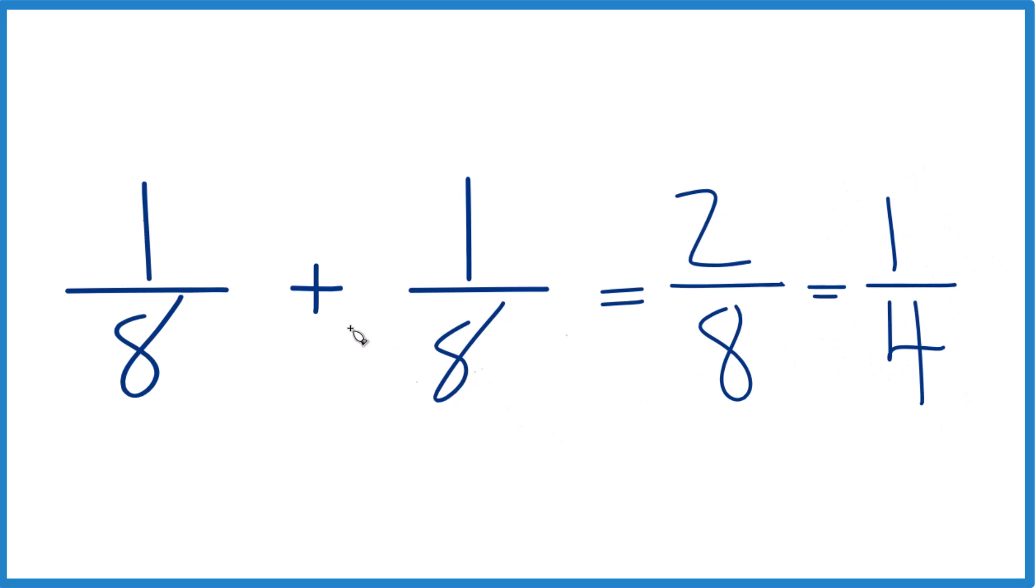So the key idea here is if we have the same denominator, a common denominator, just bring that across and then add these numerators here together. And if you need to, simplify the fraction.